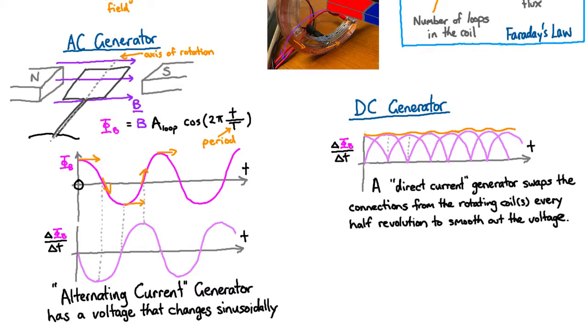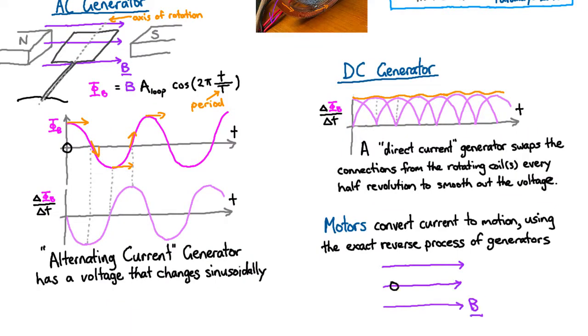DC and AC motors are just the exact reverse process. If we look at that coil in the magnetic field, instead of using force to turn the coil to try and make electricity, I'm going to apply electricity to try and cause a force. So I'm going to put a current through it.